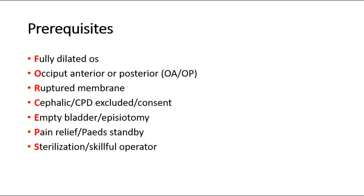These are the prerequisites to ensure before performing a forceps delivery. The mnemonic is FRCEPS. We must ensure the cervical os is fully dilated, the presentation is occiput anterior or occiput posterior, the position is known, membranes are ruptured, the baby must be in cephalic presentation, cephalopelvic disproportion has been excluded, and the mother's consent has been obtained. E stands for ensuring an empty bladder and that an episiotomy is performed.